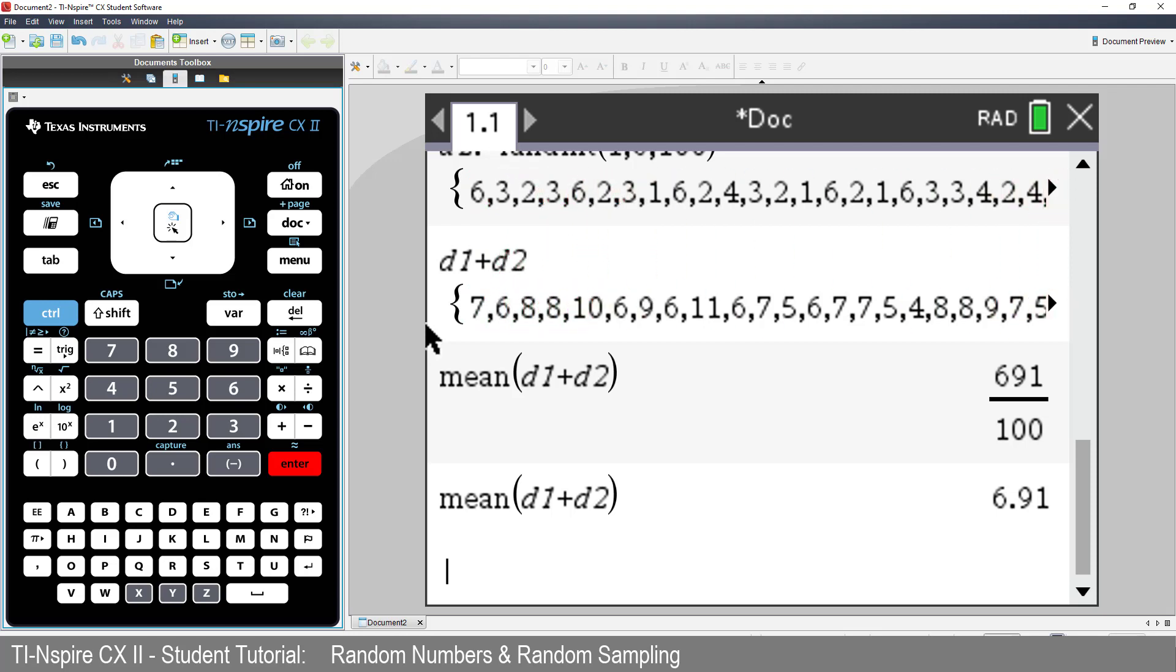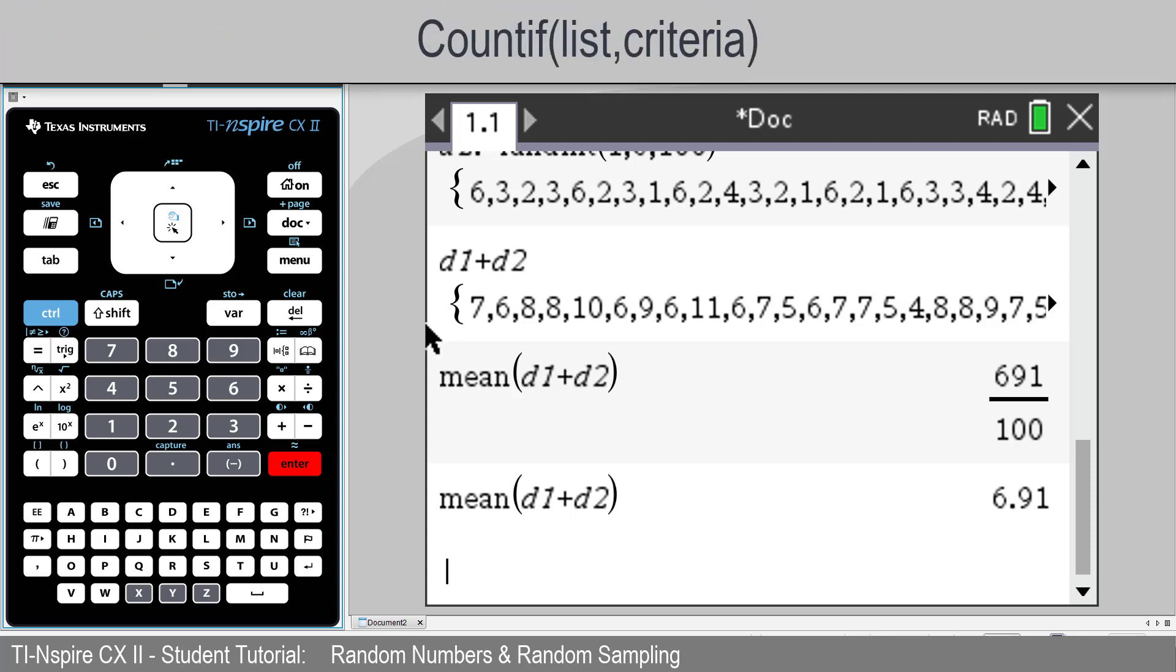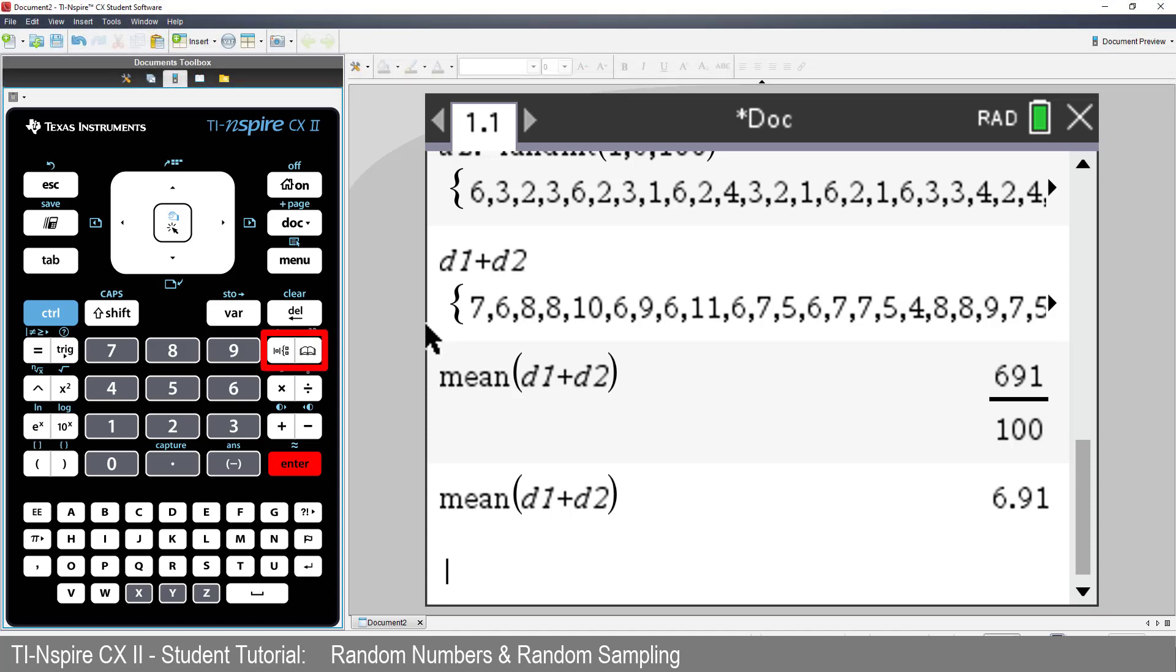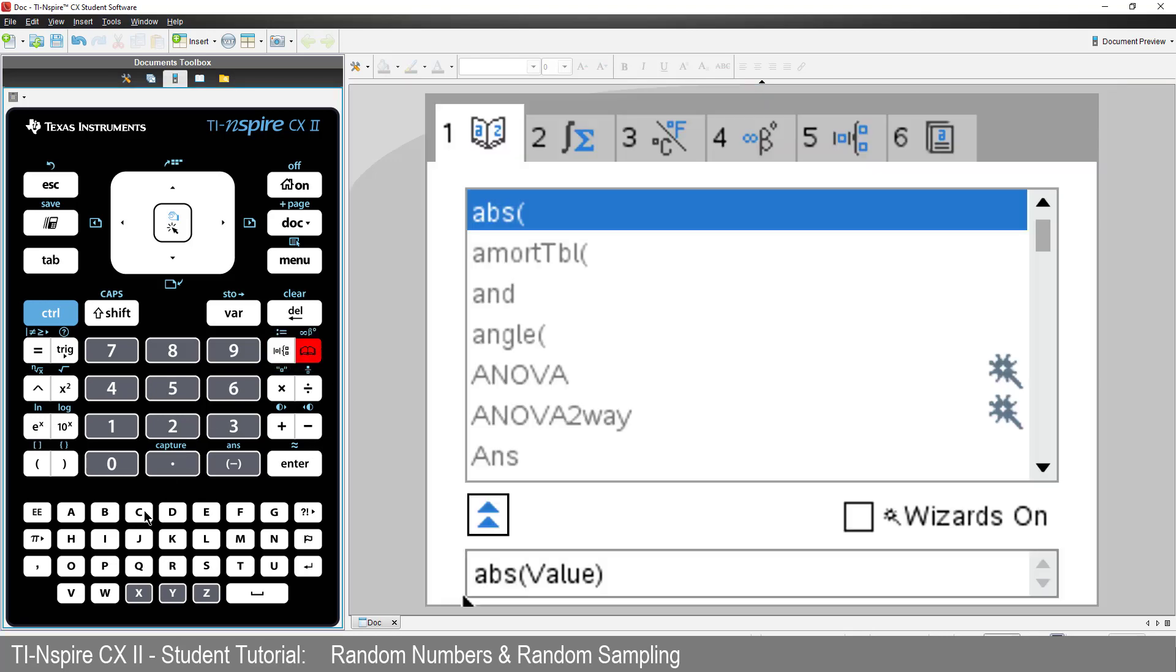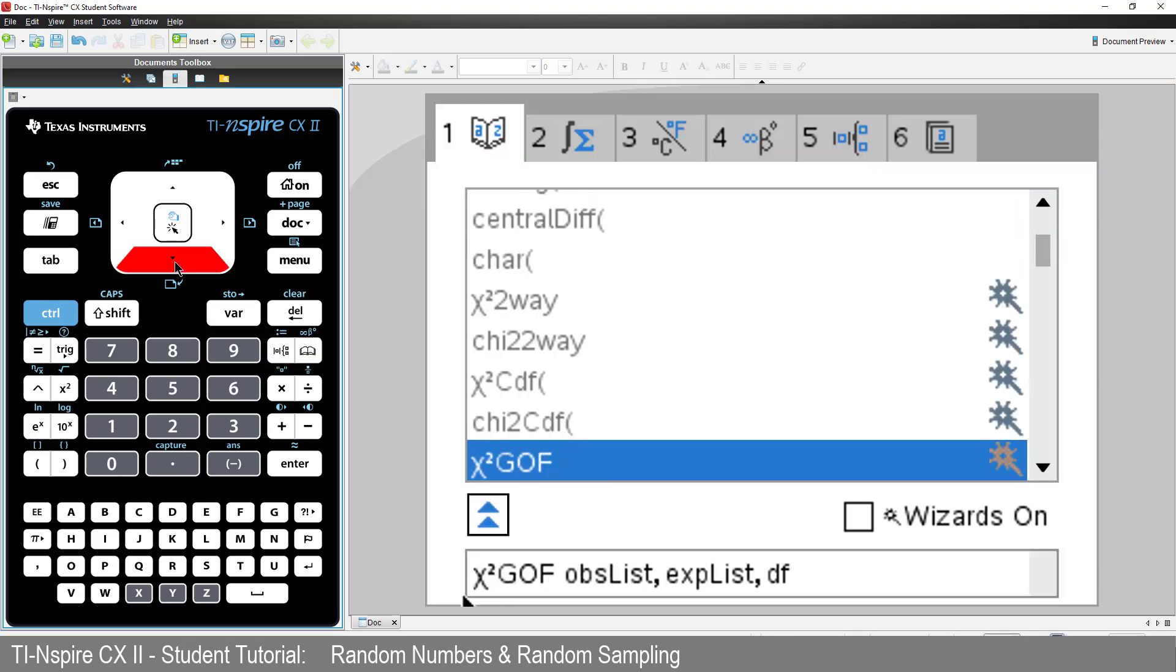Or, we could use the count function on the calculator. That is, count if there is a difference of 0 between the two dice. The count if statement can be typed directly or accessed from the catalogue. I'll press C to jump down a bit, then scroll down.